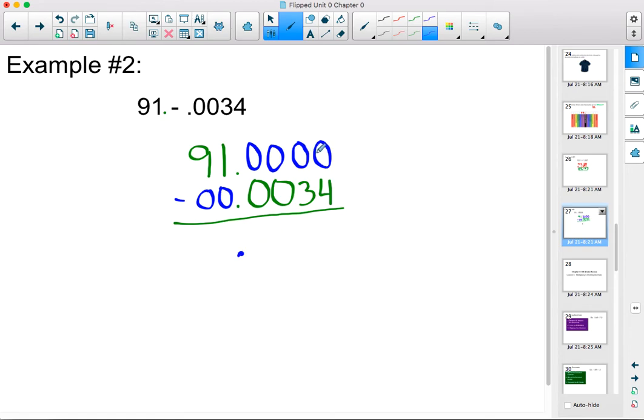And now I have to do some subtracting. Zero minus four. I cannot do that. I can't take four from nothing. So I have to borrow. So I look to the number next door. It's another zero. There's nothing to borrow from it. I look to the number next door. Another zero. Nothing to borrow. Another zero. Nothing to borrow. So I have to go all the way over here to the ones place. And I'm going to borrow from that ones place. I'm going to borrow one. That means there are zero ones left in the ones place.